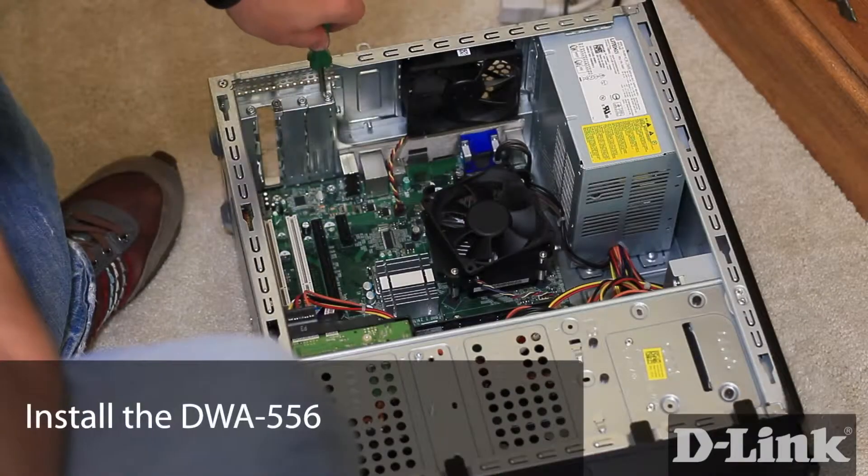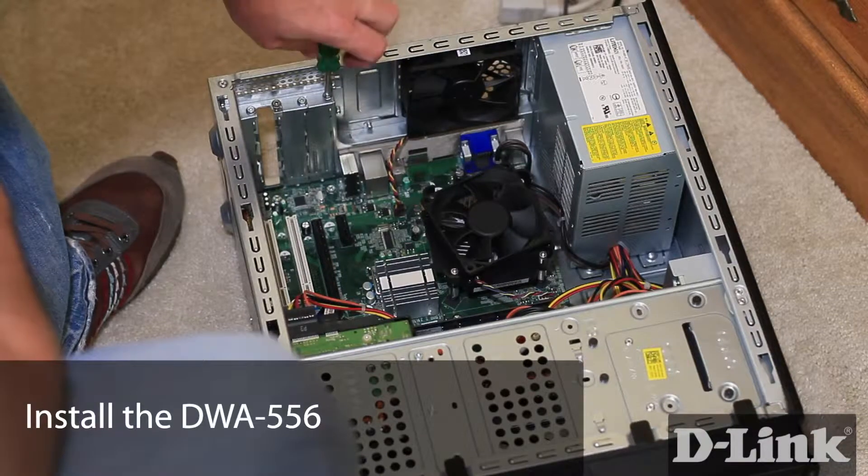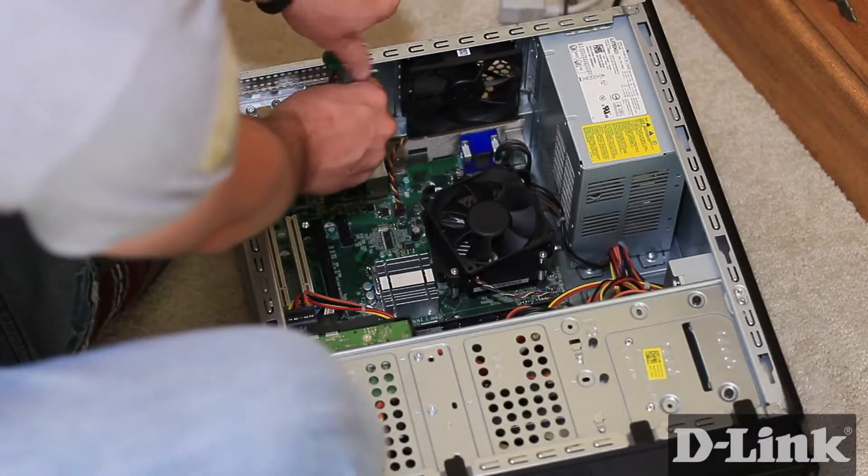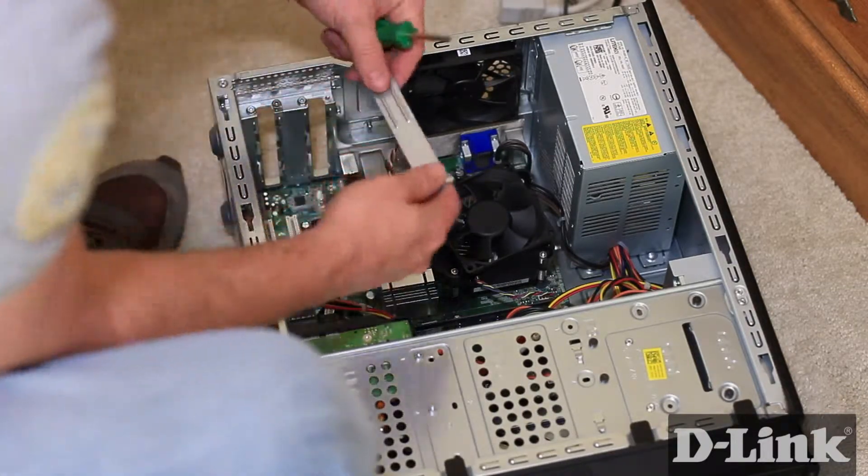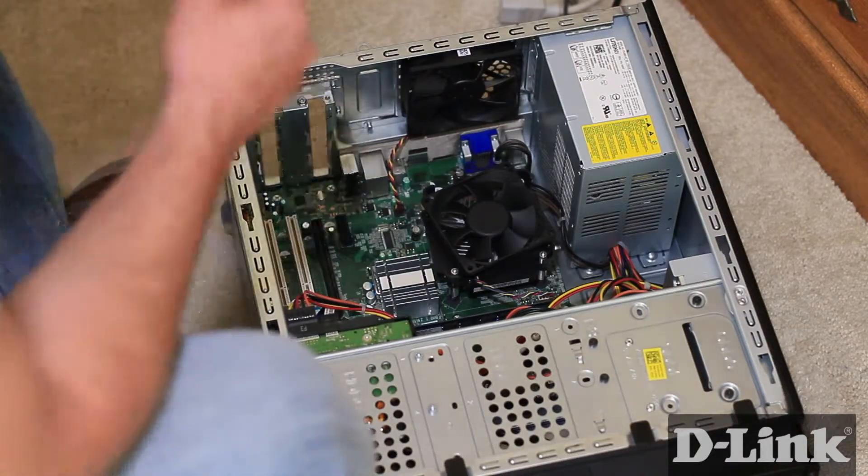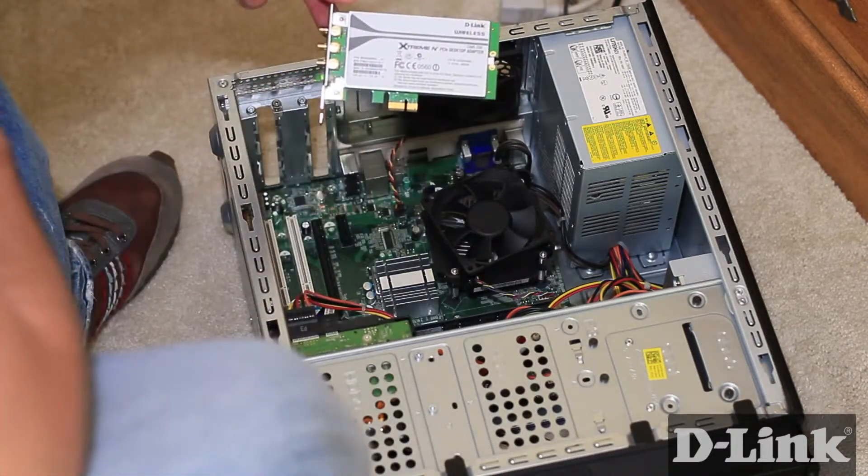Now, to install the DWA-556, remove the blank faceplate that lines up with the PCI Express slot. We needed a Phillips head screwdriver to remove the screw, but many PC manufacturers have switched to the easy to remove thumb screws for this as well.